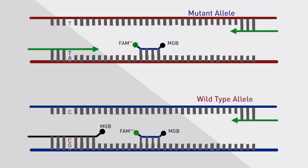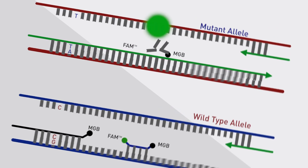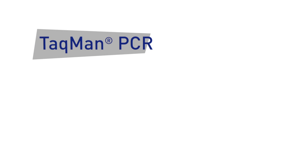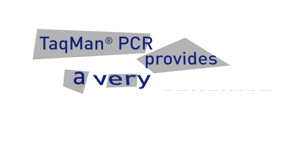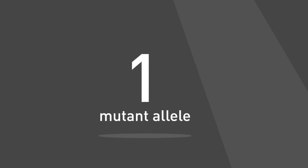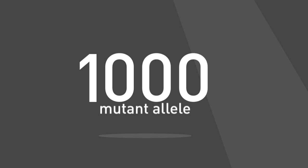Only the mutant allele is amplified and generates a fluorescent signal. By increasing the specificity and inhibiting the amplification of the wild-type allele, this Competitive Allele-Specific TaqMan PCR provides a very sensitive and specific method to detect as low as one mutant allele in the presence of a thousand wild-type alleles.